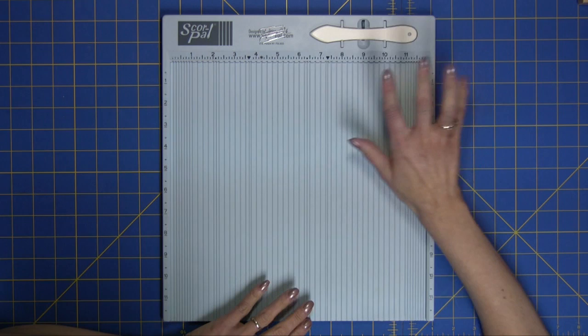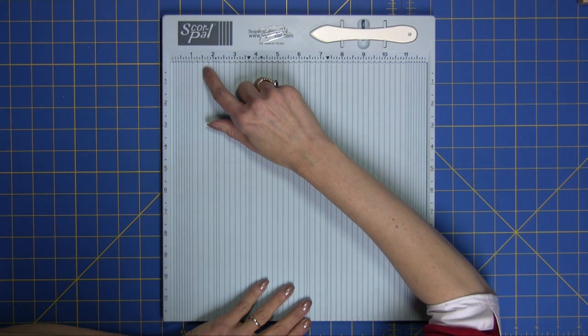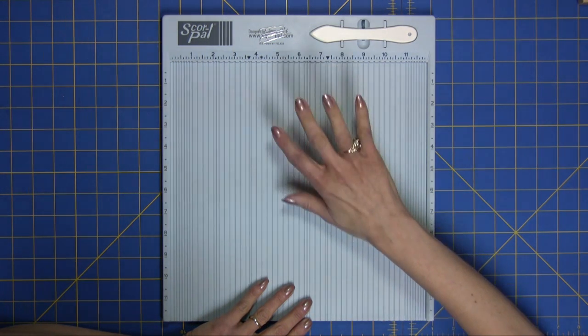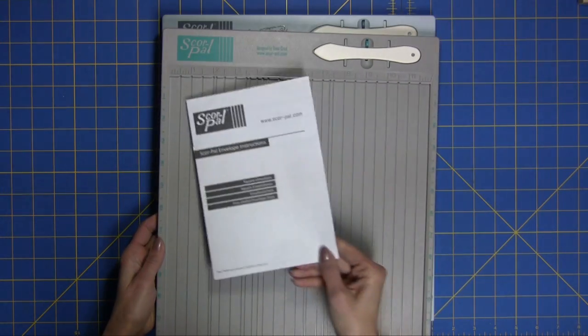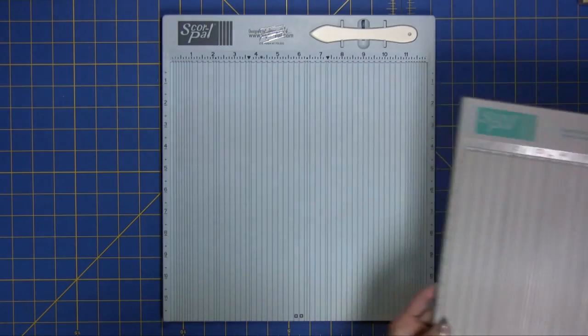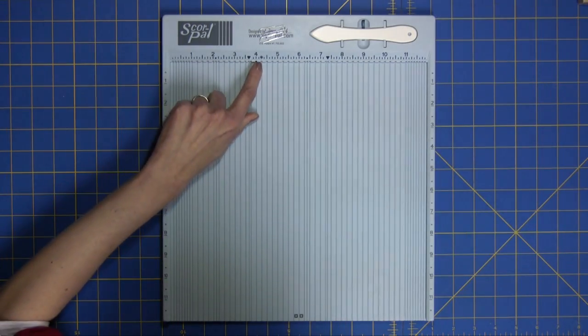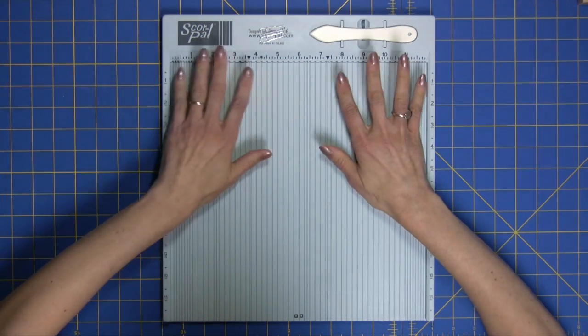But even more important than that is now you have scoring every fourth of an inch, which I think is absolutely wonderful, where the older version had score lines like every half of an inch. You still have markings here for special folds, gate folds, etc.